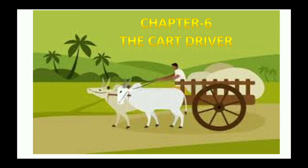This chapter is like a play and in this play there are three people. The first one is Cart Driver, and Traveller 1 and Traveller 2. This story is like a play and dialogues are given of these three people: Cart Driver, Traveller 1 and Traveller 2.